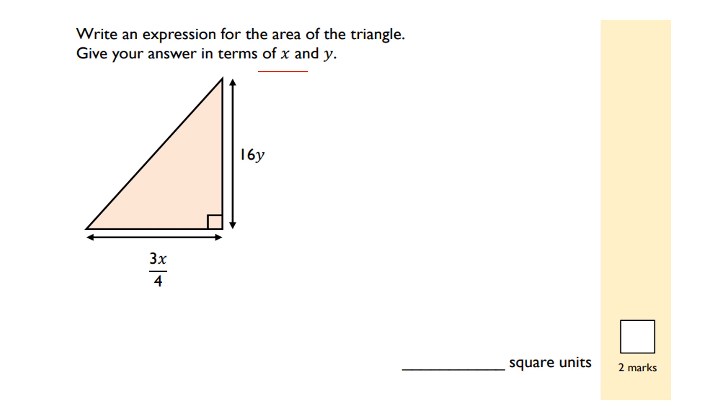The formula for area of a triangle is base times height divided by two, or a half times base times height. Okay, so I'm going to do a half.